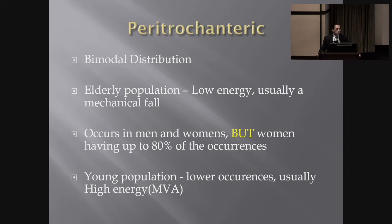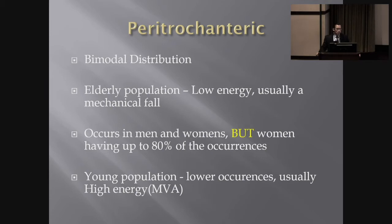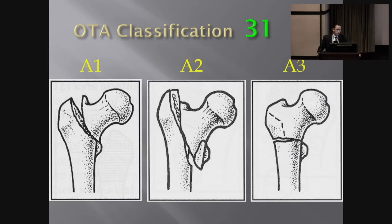Who gets them? Young and old. Generally speaking, the elderly population unfortunately accounts for a large amount of these patients because of fragility and balance issues. As a result they suffer mechanical falls and sustain these injuries. It occurs in both men and women, but unfortunately women make up the large portion — almost 80 percent. Peritrochanteric fractures do occur in the young patient, but generally it is a high-energy event following a motor vehicle accident.